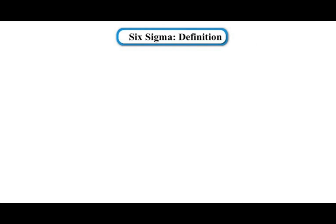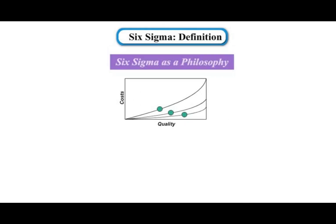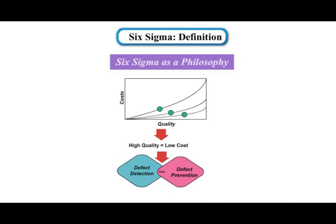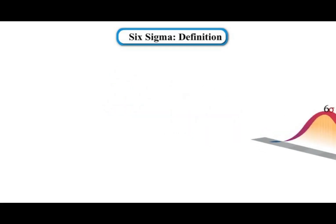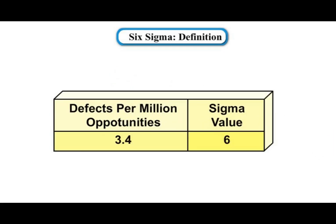Definition: Six Sigma is a fact-based, data-driven philosophy of quality improvement that values defect prevention over defect detection. In simple words, Six Sigma quality performance means no more than 3.4 defects per million opportunities.